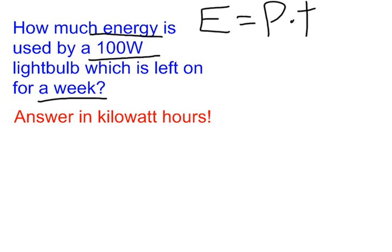Normally, we would do watts times seconds, and we'd get an answer in joules. We're not going to do that here because we want our answer in kilowatt hours. So I need power listed in kilowatts. How many kilowatts is 100 watts? A kilowatt is 1,000, so this is less than a kilowatt. It's actually one-tenth of a kilowatt, or 0.1 kilowatts.